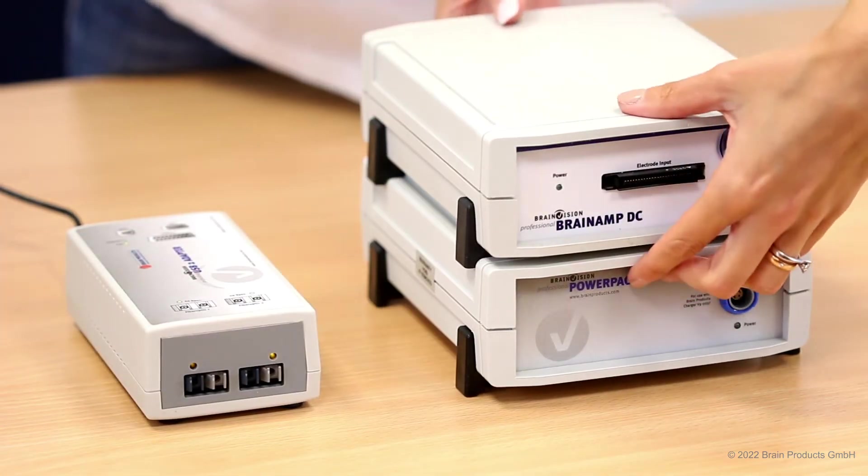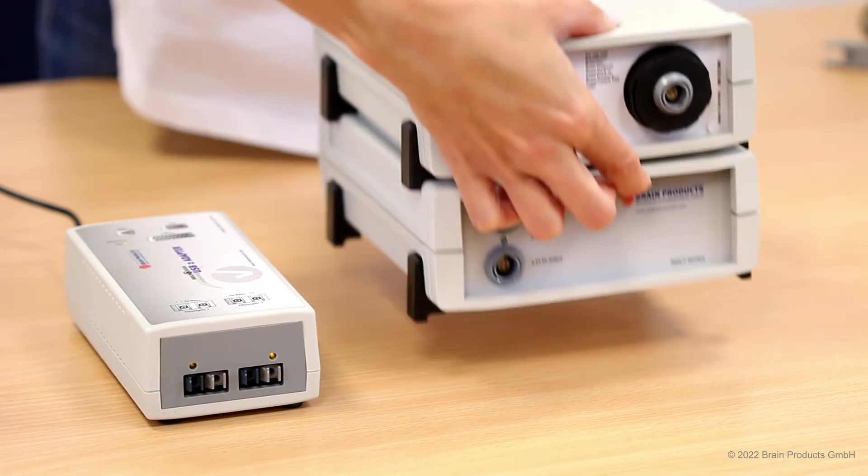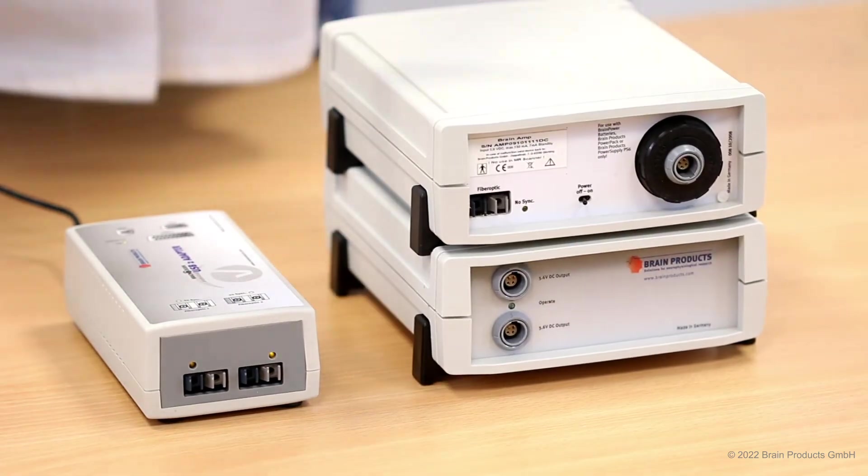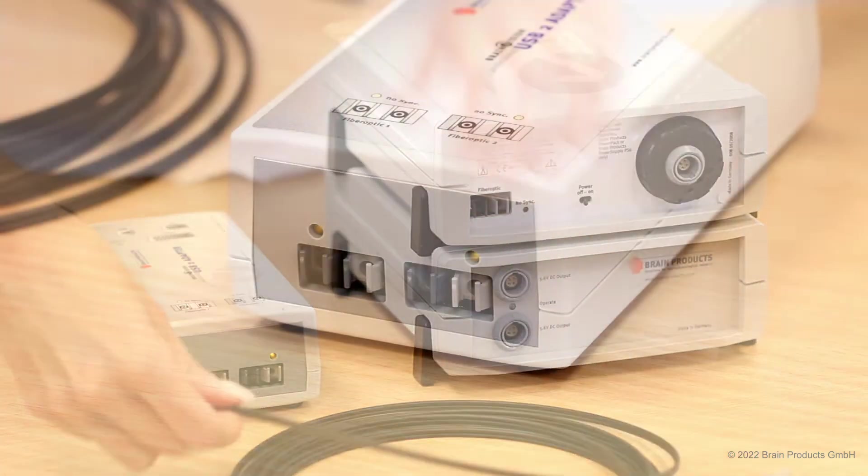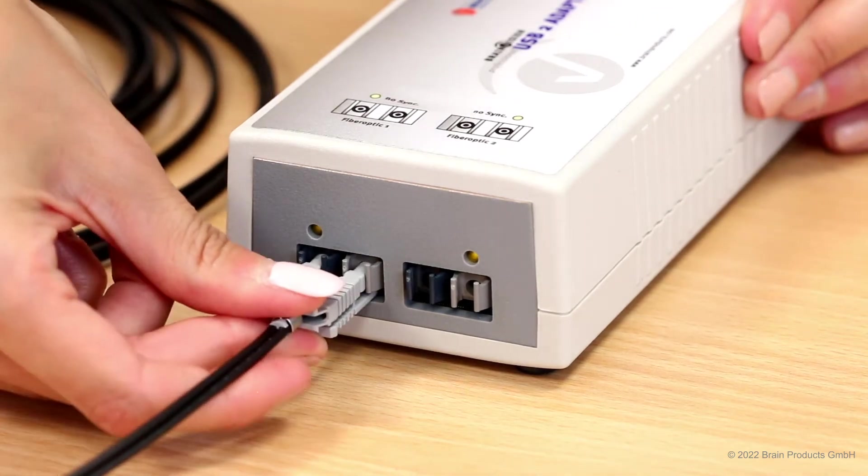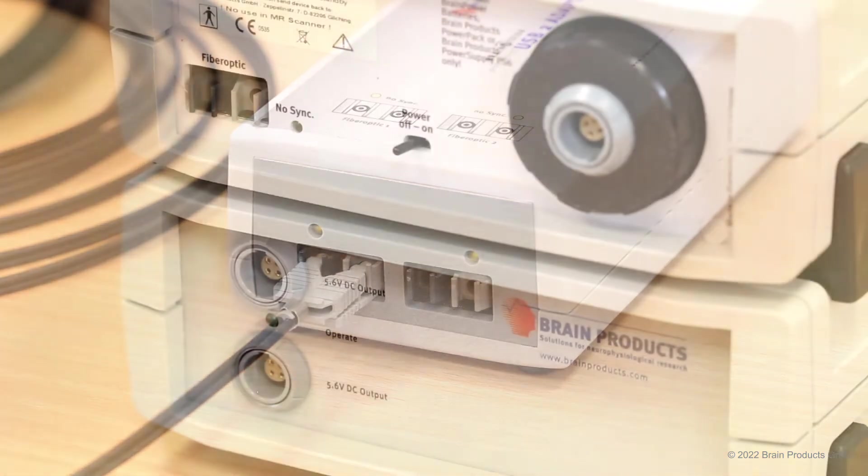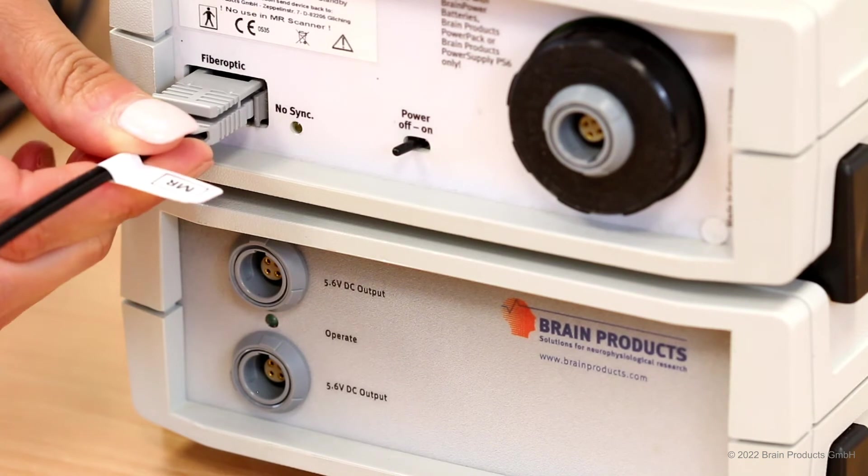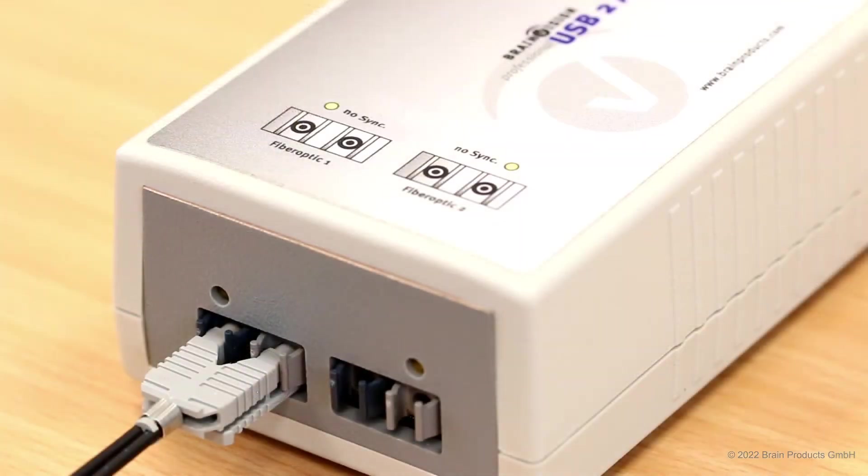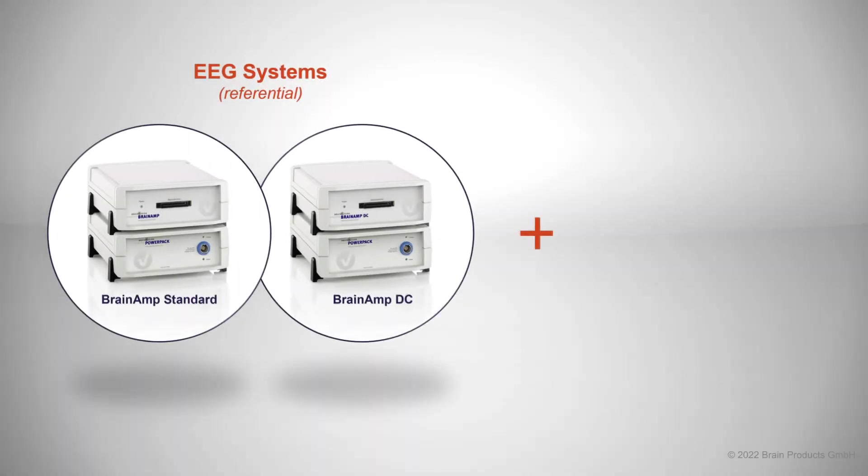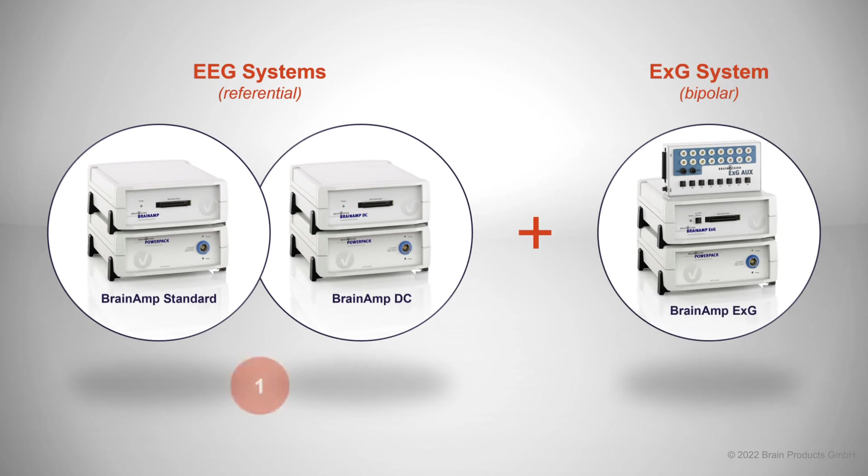Next, connect the amplifier to the relevant connection on the BUA using the supplied fiber optic cable. A BUA64 can accommodate up to two BrainAmp amplifier units and therefore has two connections marked fiber optic 1 and fiber optic 2. If you are using both a referential and a bipolar amplifier, always connect the referential amplifier first and then the bipolar.